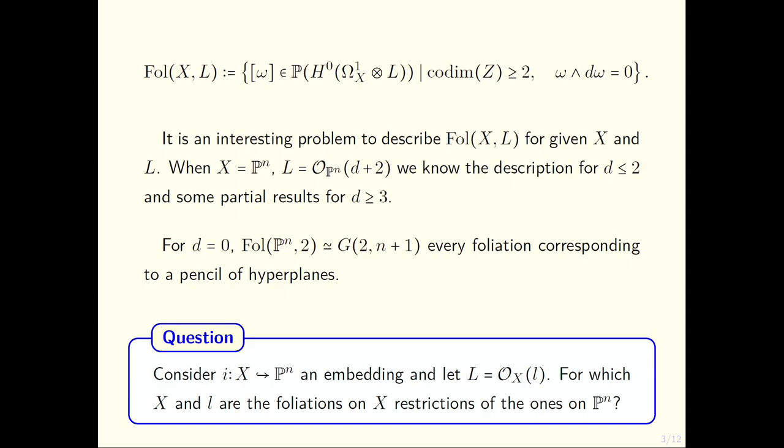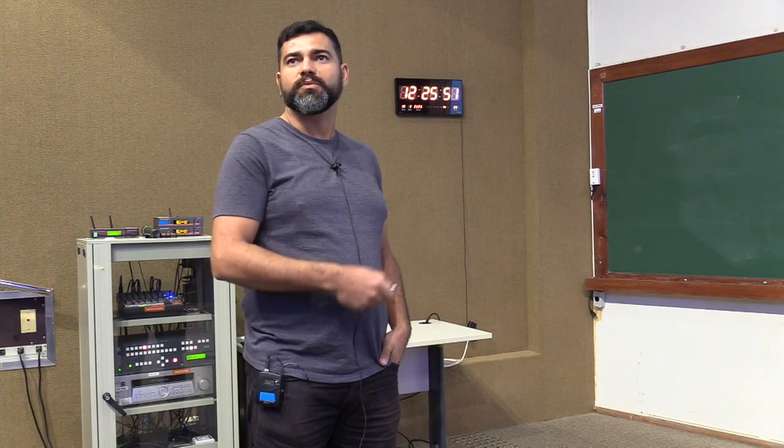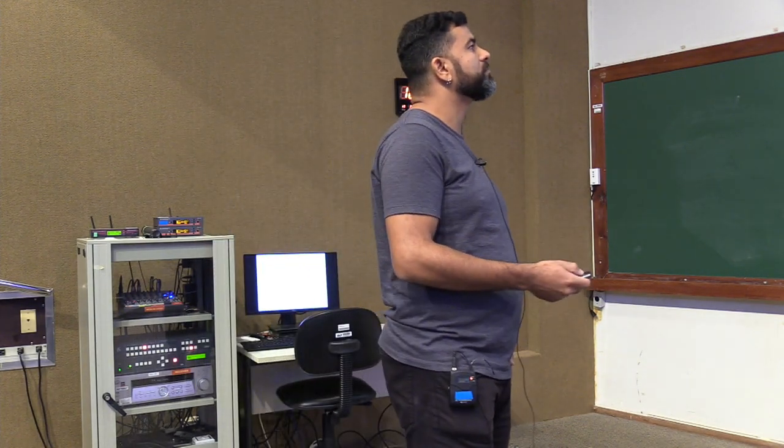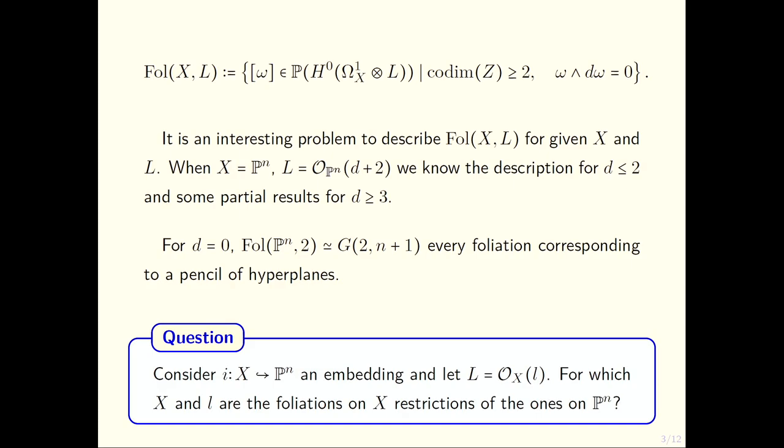In general this is false. You can take ℙⁿ and take some Veronese embedding and there will be a lot of foliations on this variety that don't come from this embedding, but in some cases this is true.